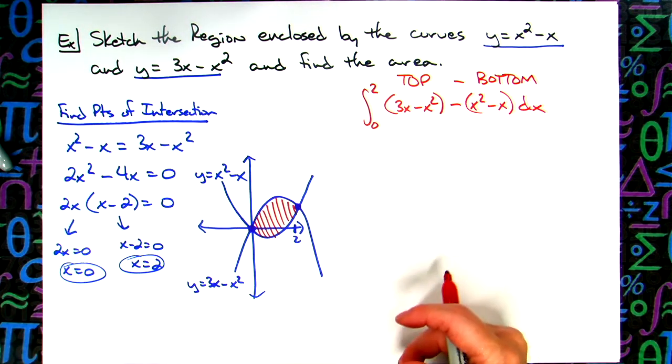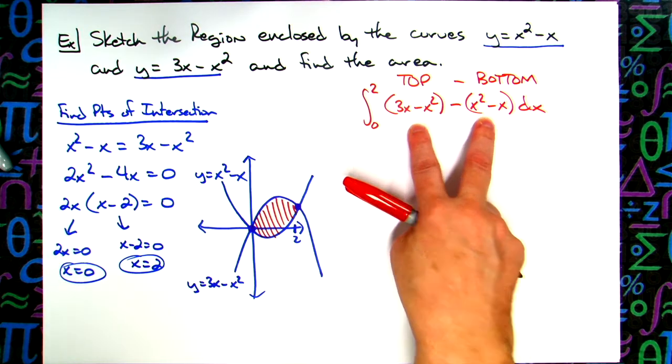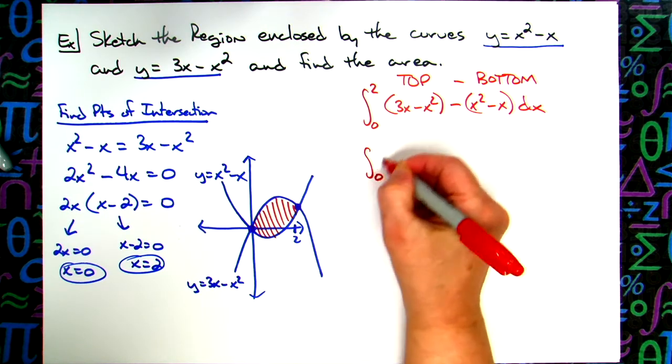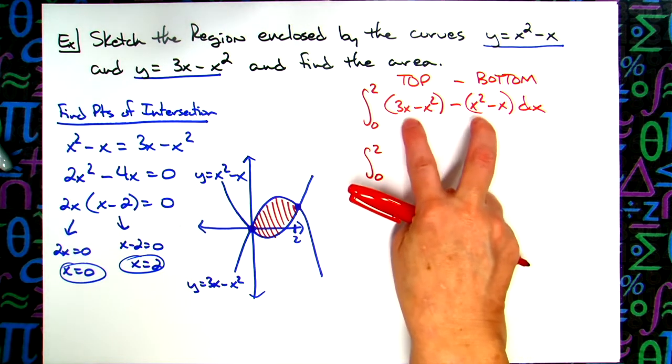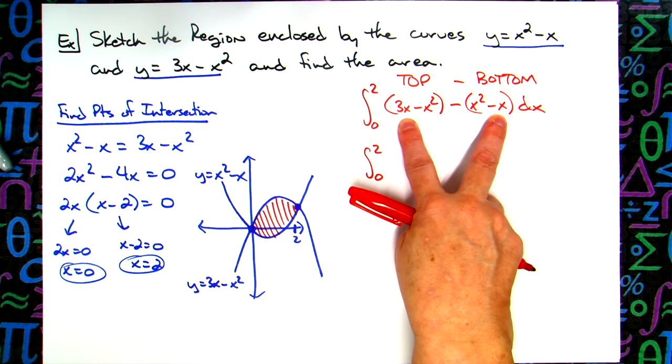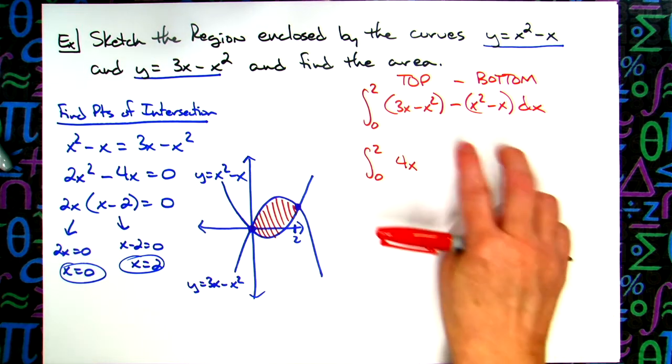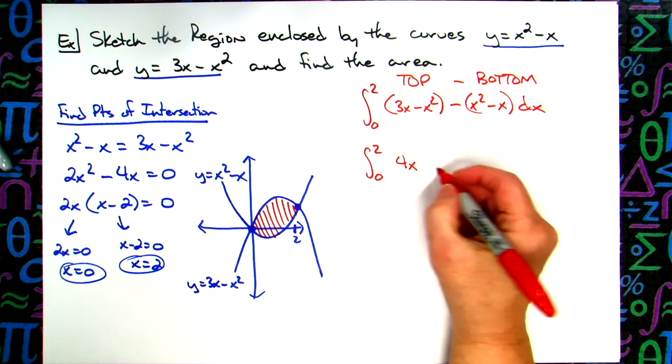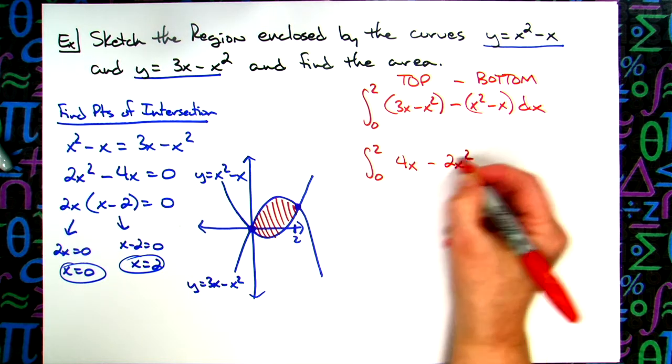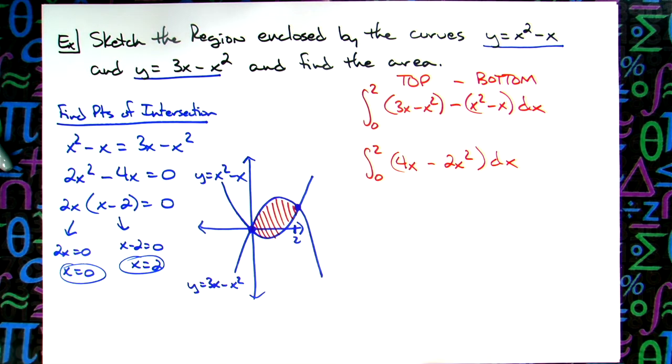And now from here the rest of the way down it is a straight integration problem. So let's go through and simplify this. Do some algebra in here. We'll have an integral from 0 to 2. If I put these two together first here, 3x minus a negative x is going to give me 4x. Putting the x squared terms together I'll get minus 2x squared. Now we're down to just a nice little polynomial curve there. We can integrate.